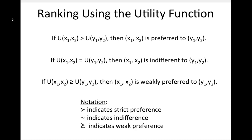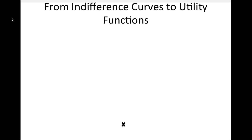Remember the notation that we use to represent preference: the curved greater-than sign represents strict preference, the squiggle represents indifference, and the curved greater-than sign with the squiggle represents weak preference. Now that we have established what a utility function is, let's consider some examples of how to take a set of indifference curves and generate a utility function that describes the preferences illustrated in those curves.